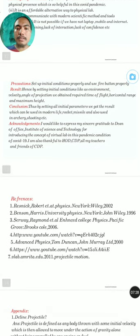Precautions: Set initial conditions properly and use fire button properly. Result: By setting initial conditions like environment, velocity, and angle of projection, we obtain the required time of flight, horizontal range, and maximum height.